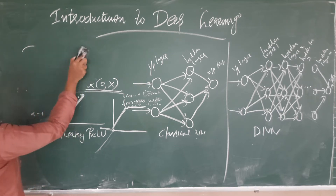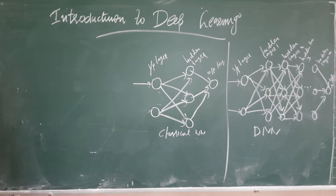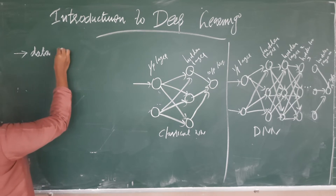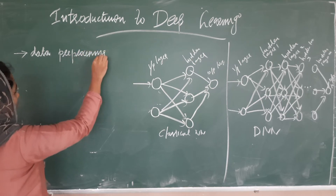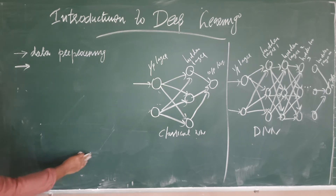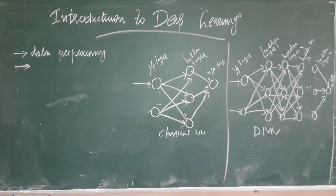Now we will see some basics required to build any deep neural network. The first step is data preprocessing, because data is the most important factor — the quality of your output depends on the quality of your input data. If your input data is good, you can get quality output; otherwise the output will suffer. For example, when dealing with text data, you can remove stop words and similar noise. Some kind of data preprocessing depending on your application must be done.